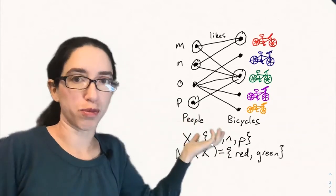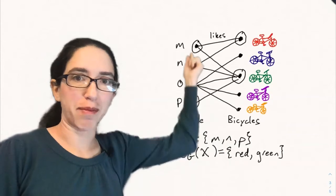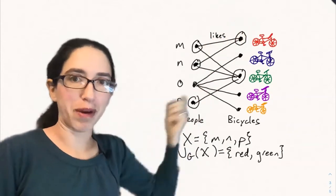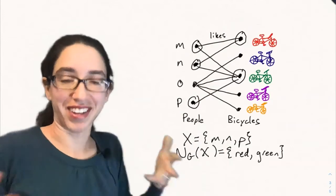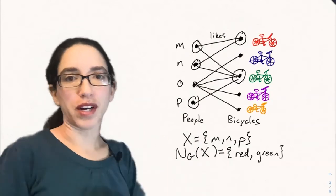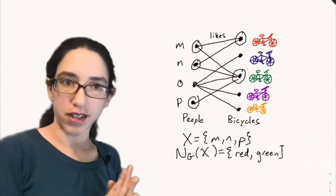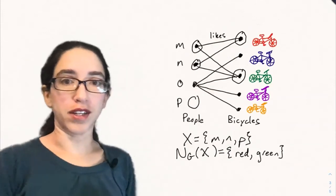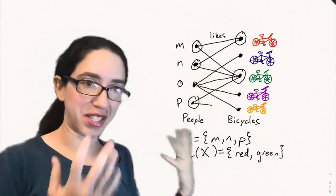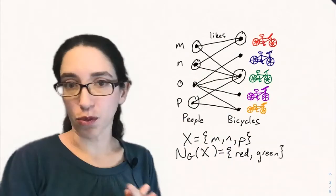In fact, you can even see by the pigeonhole principle now, you can't match M, N, and P with the red and green bikes because there's not enough bikes to go around. Two people will have to share the same bike, and that's no good. So this graph does not have a matching. And so it doesn't have a matching in which every person can have a bike, at least. It has some matchings, but they're not size four.